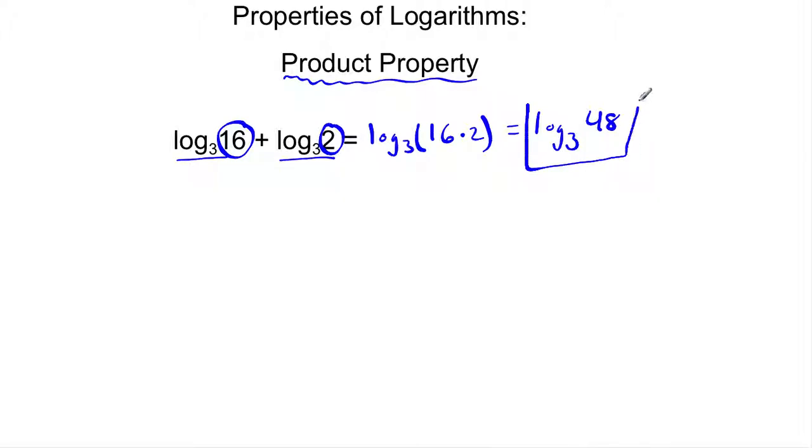So I actually get log base 3 of 48. And I can actually leave it like this, and that's fine. I don't need to get a decimal approximation. But notice when we have the sum of two logs with the same base, we write it as one log with the product of what we are taking the log of.